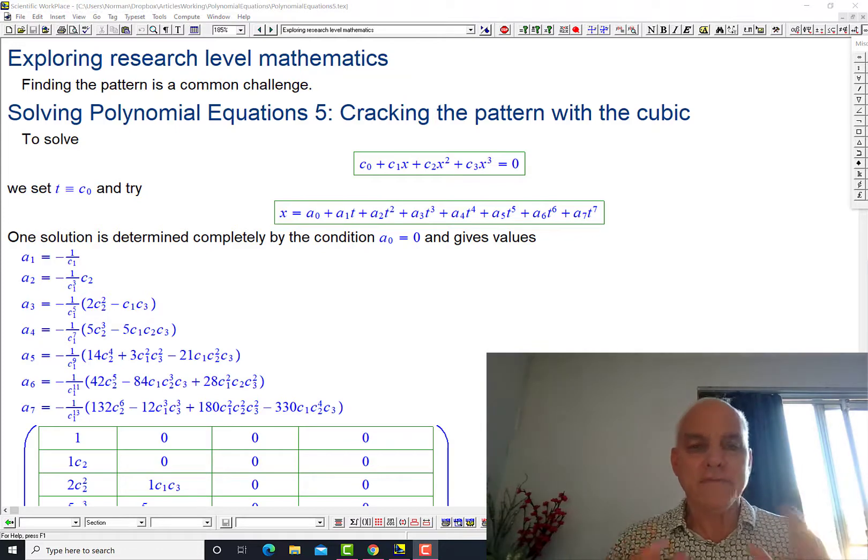So I left you hanging last time. We had gotten somewhere in terms of a general solution to a cubic equation. So let me remind you that we started with this cubic equation here, c0 plus c1x plus c2x squared plus c3x cubed equals zero.